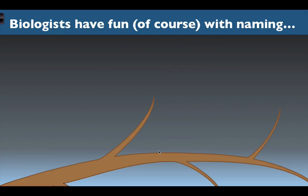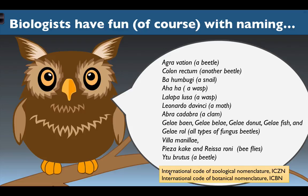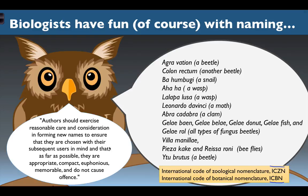Just because there are a lot of rules of taxonomy doesn't mean we can't have a little fun with it. Biologists have come up with some interesting names. You can't have too much fun, however, because you might violate some standards. There are two overseeing codes: the International Code of Zoological Nomenclature (ICZN) and the International Code of Botanical Nomenclature (ICBN). These governing bodies review names that scientists give organisms and have rules to follow.